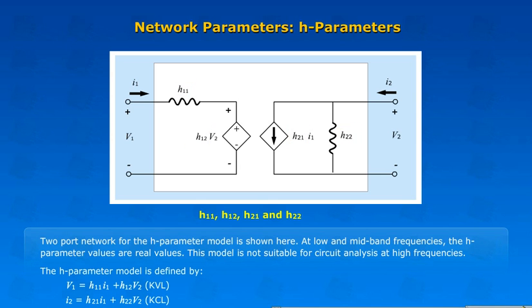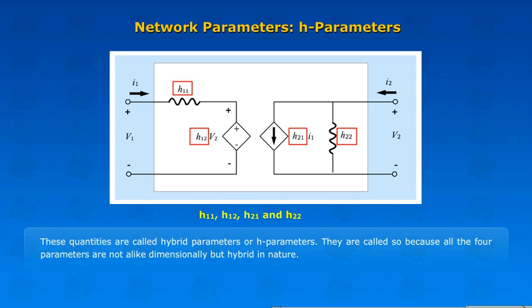The H-Parameter model is defined by these quantities, which are called hybrid parameters or H-Parameters. They are called so because all the four parameters are not alike dimensionally but hybrid in nature.